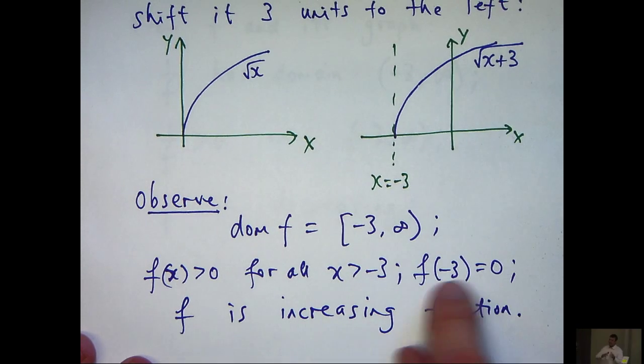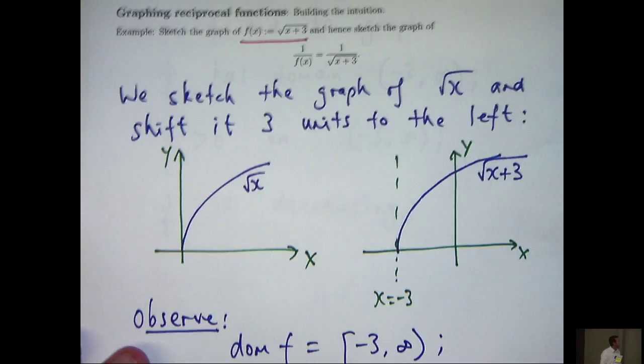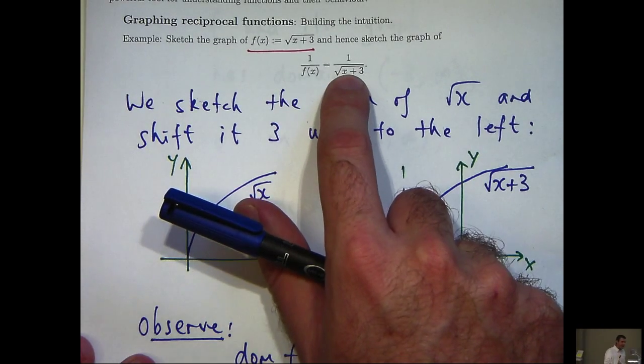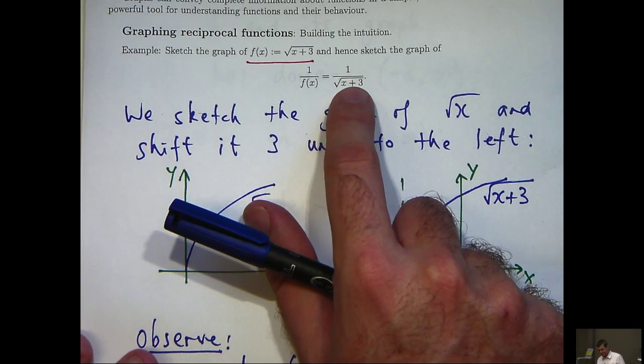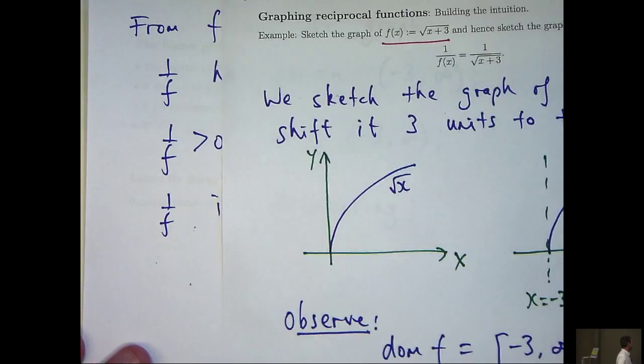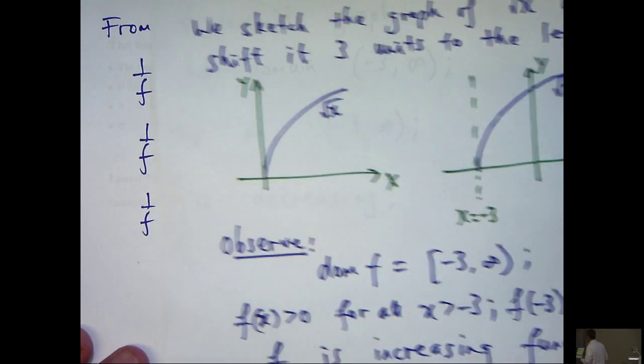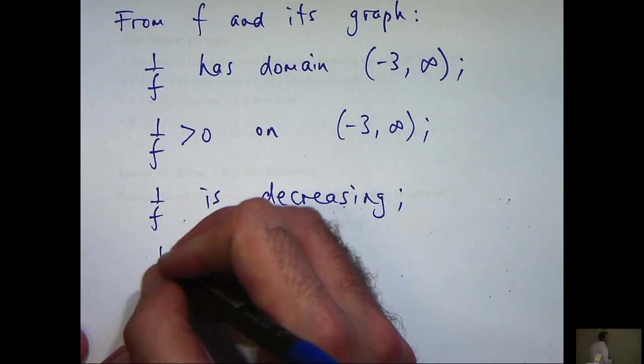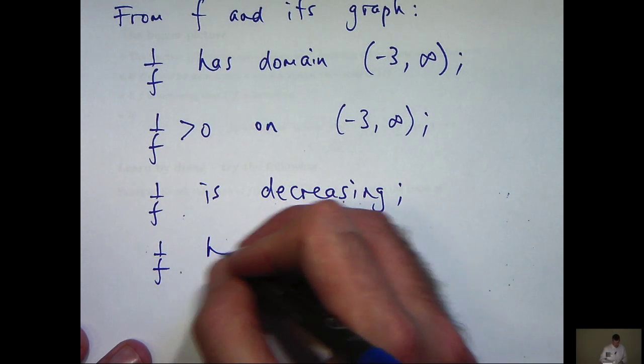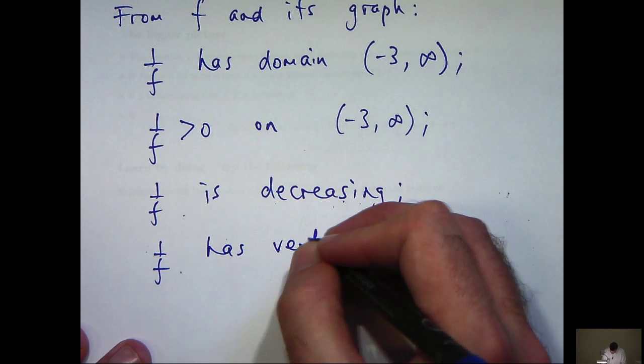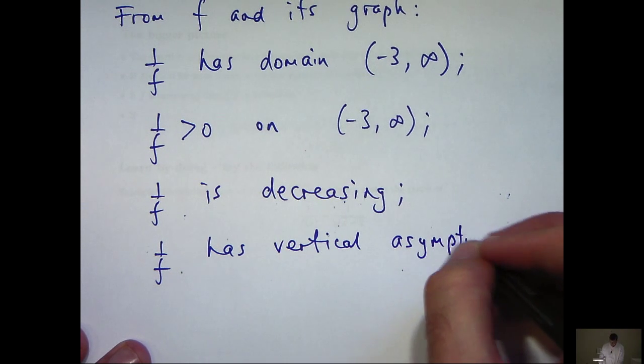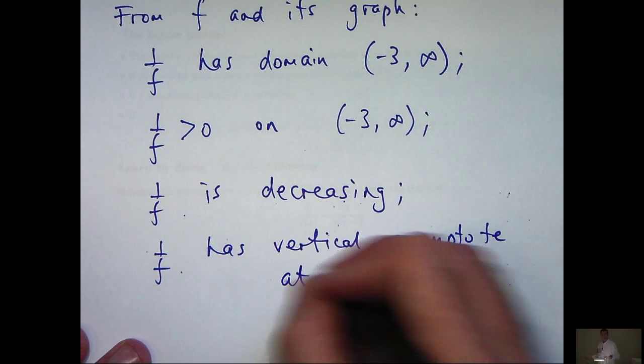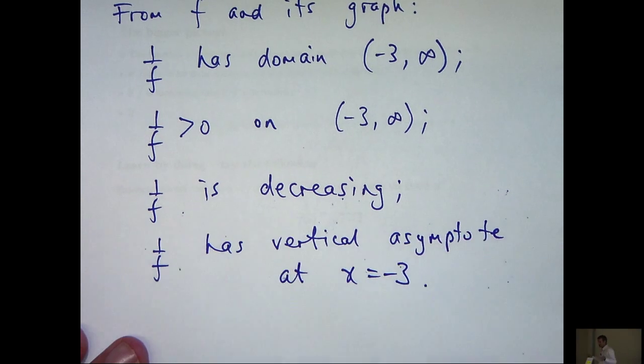And finally, this piece of information, f of minus 3 equals 0, well, again, we can't divide by 0 at x equals minus 3 up here. So the line x equals minus 3 will be a vertical asymptote for the reciprocal function.